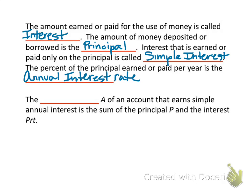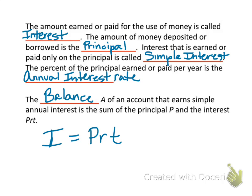The balance can be calculated on an account that earns simple interest by taking the sum of the principal and adding to it the interest. So this is the balance of the account. The formula we're going to be using a lot today is that interest is equal to the principal times the rate times the amount of time in years.